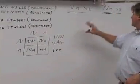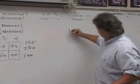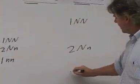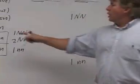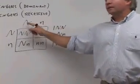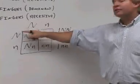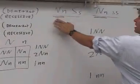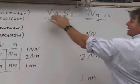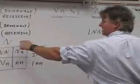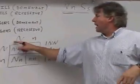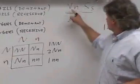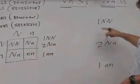Once you get that ratio, write it down and give yourself some space: one big N big N, two big N little N, and one little N little N. Note that you don't have different letters on a Punnett square — you have N's crossed with N's. You're crossing the trait for nails between the father and the mother. You don't combine N's and S's. If you see two different letters in a Punnett square, you should know right away that you're doing it wrong.